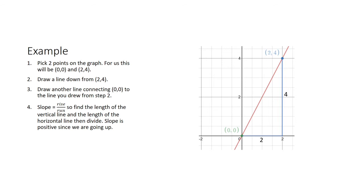So the length of the vertical line is four, the length of the horizontal line is two, and thus the slope is the rise over the run, which is four over two, and that simplifies to two.